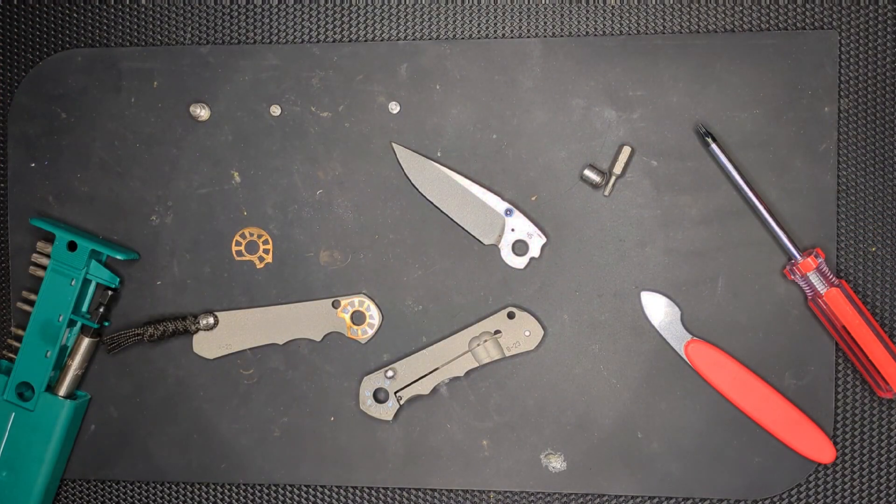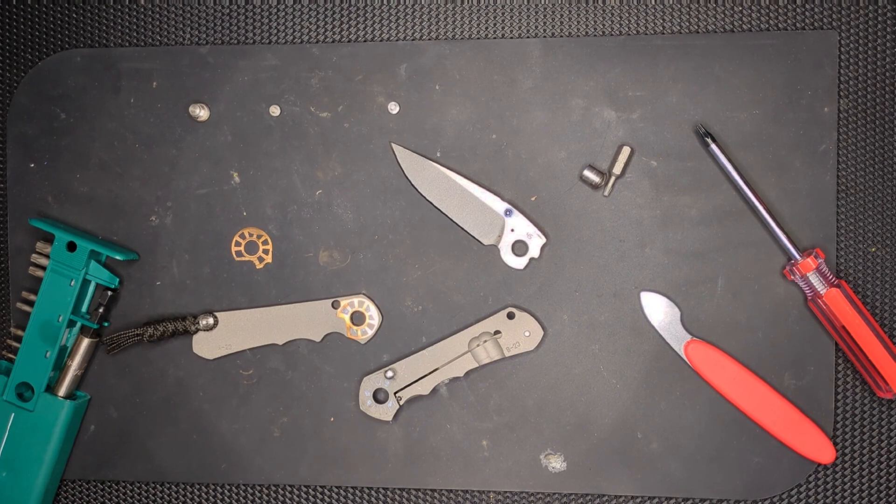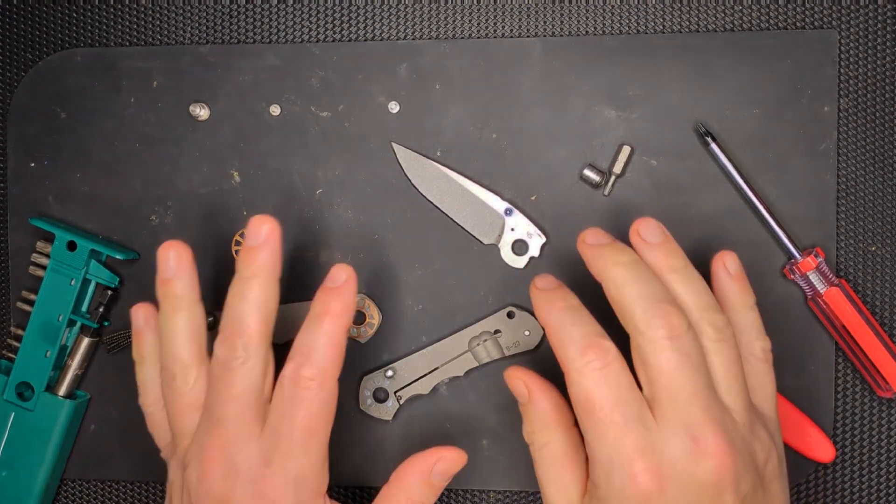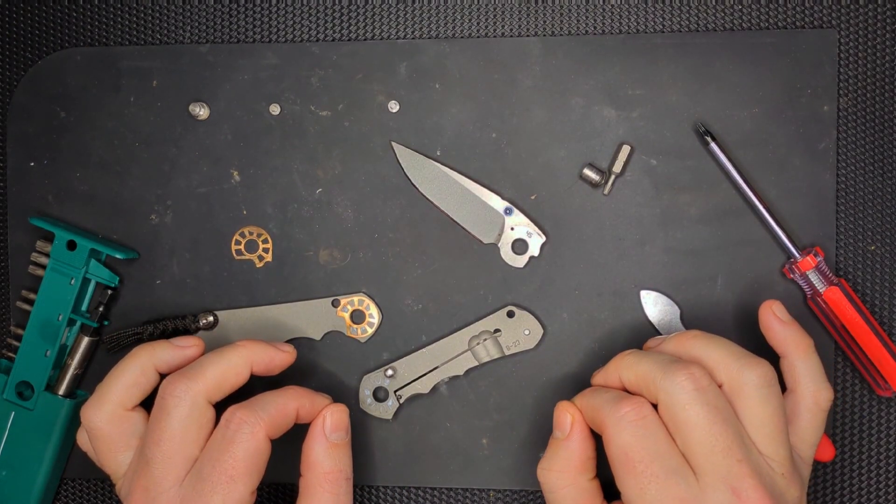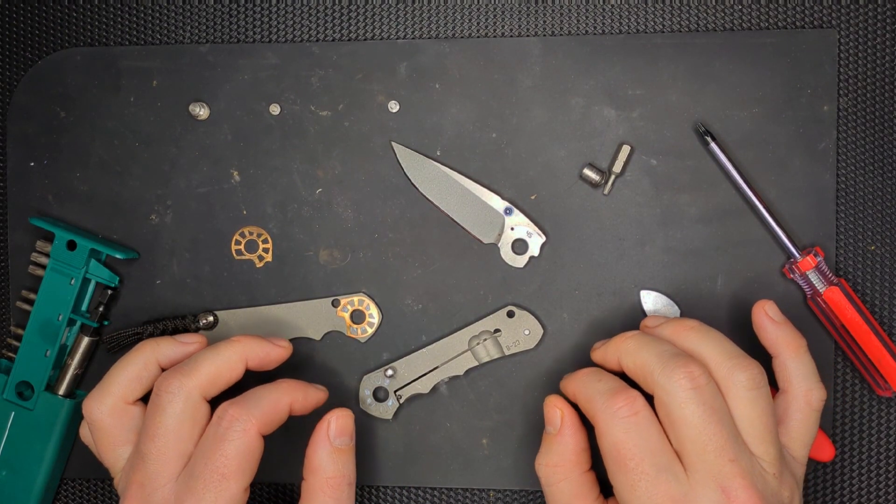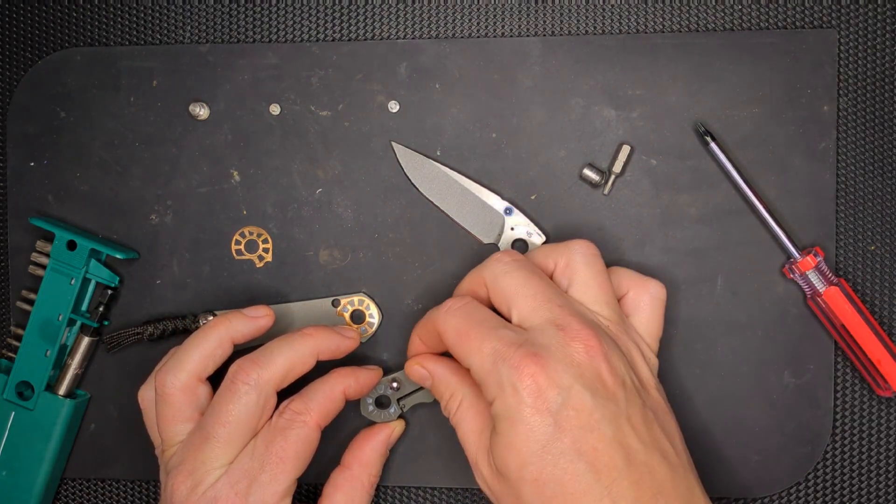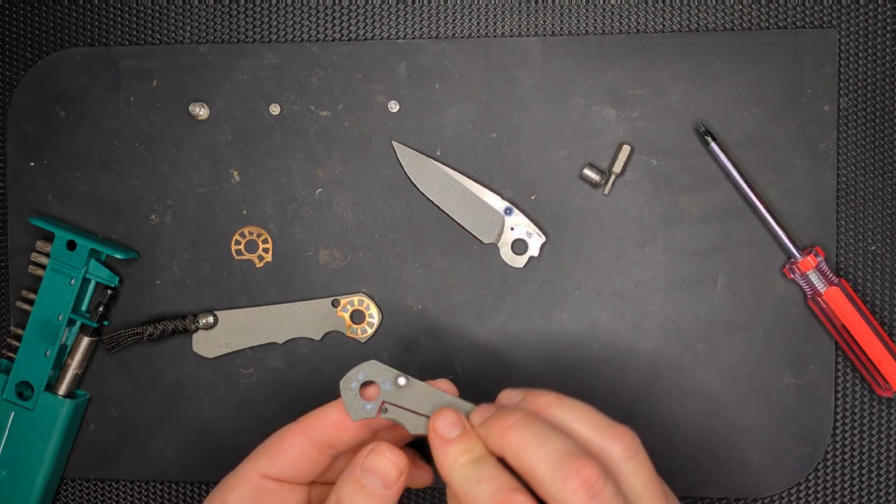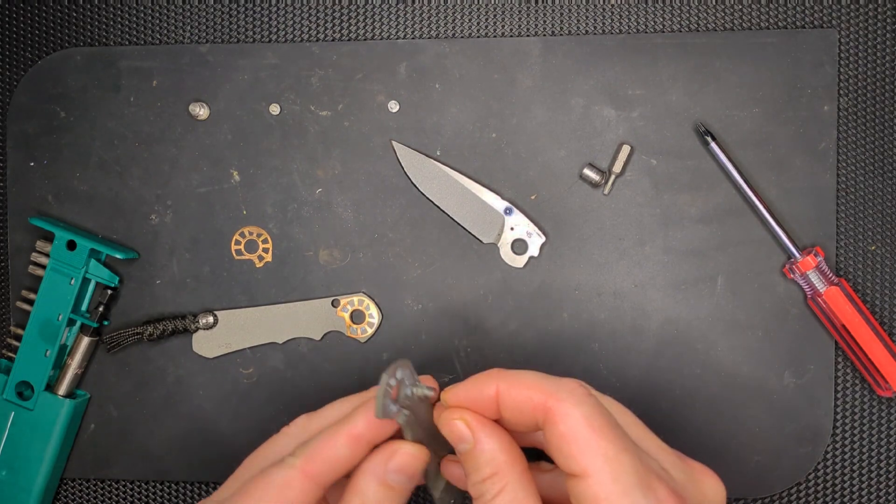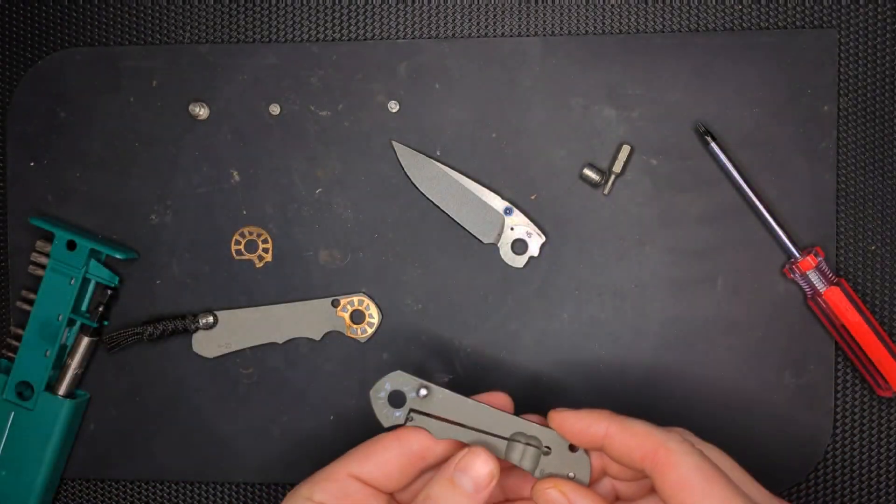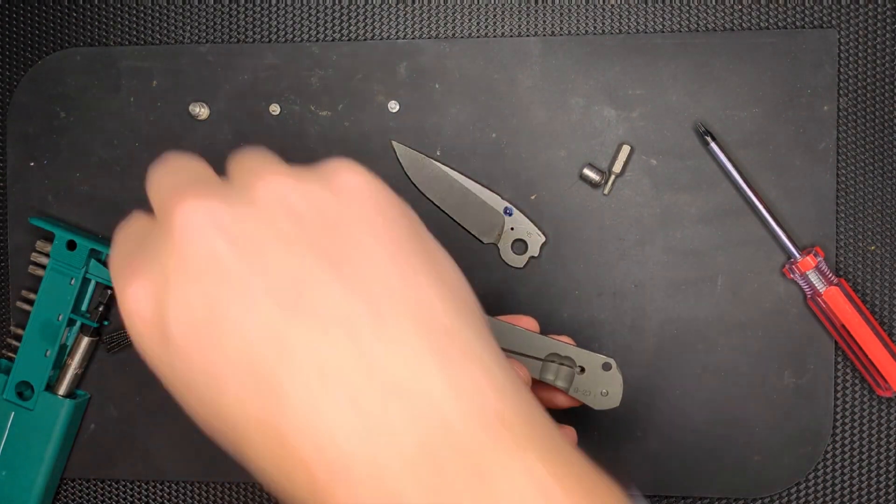And we're back. One thing that everyone always says about these is tolerances. The machining tolerances on this are very high, and things fit together very precisely, and that's one of the reasons why you're paying so much for this, is how well everything fits together. And after taking that apart, I absolutely believe them, 100%. There's a lot of gunk and grime on here, and that's because I've been using this knife.